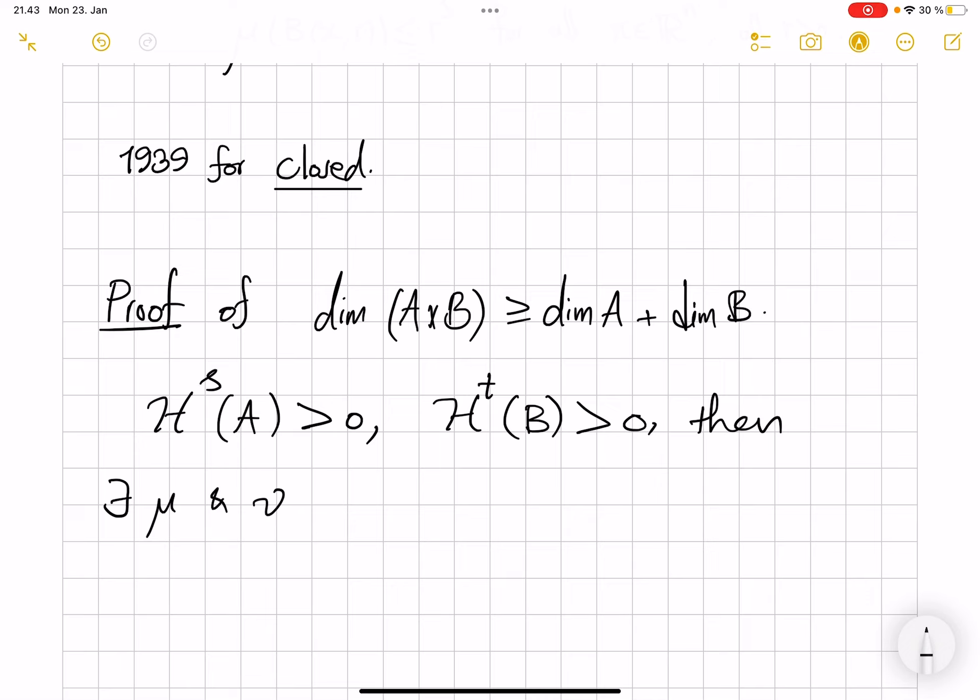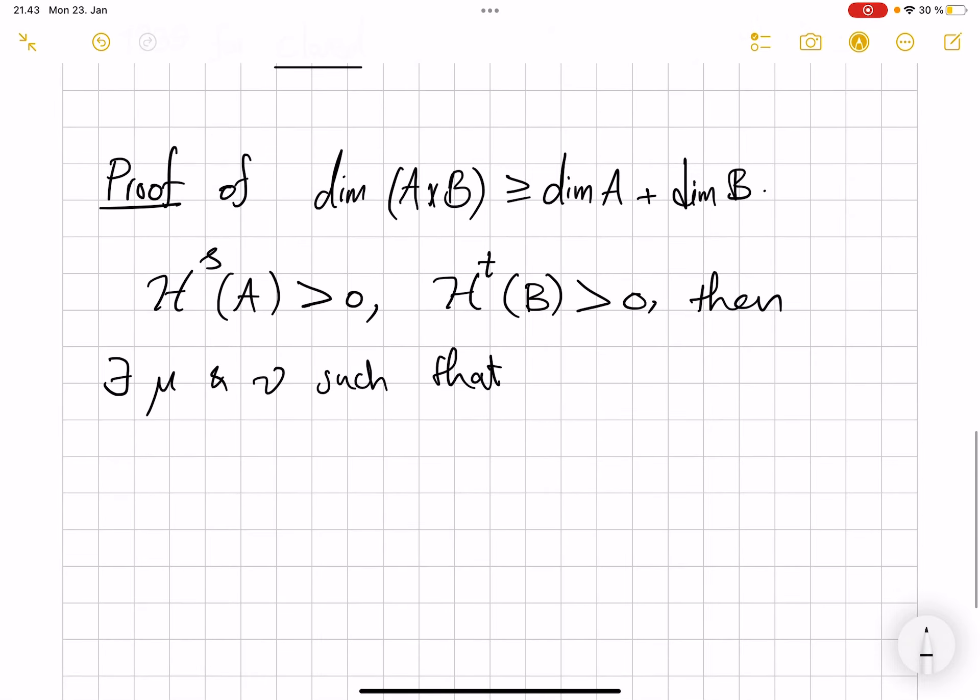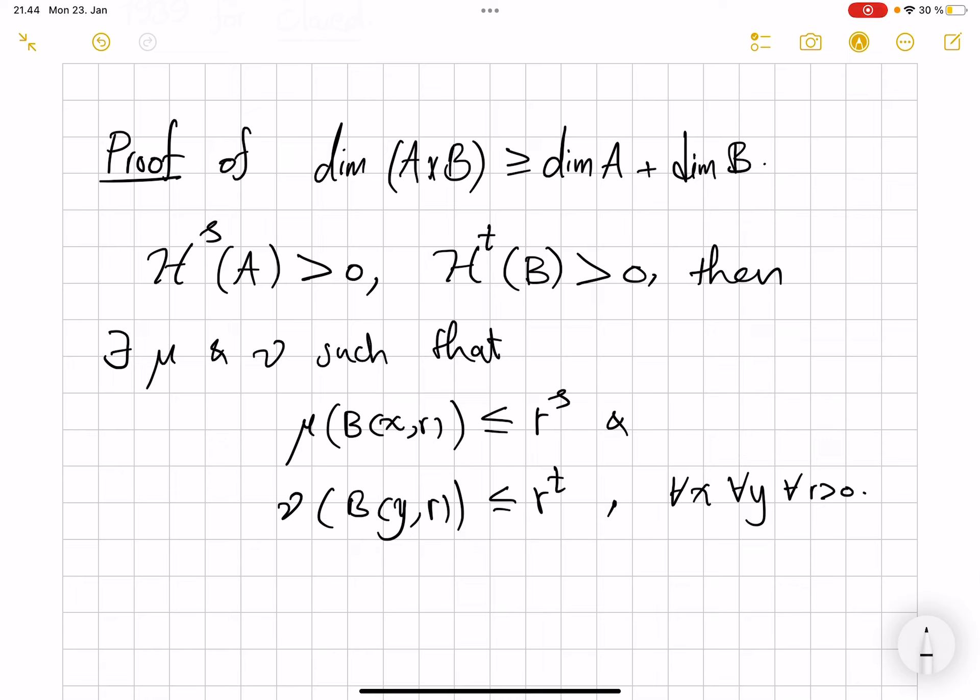This corresponds to... μ corresponds to A and ν corresponds to B. Such that μ of every ball of radius r is bounded by r to power s and ν of every ball is bounded r to power t. So here doesn't have to be the same one. So this would be for every x, for every y in R^n, and for every r positive. So this way we used one direction of Frostman's lemma. Beginning from this, we deduce the existence of that.